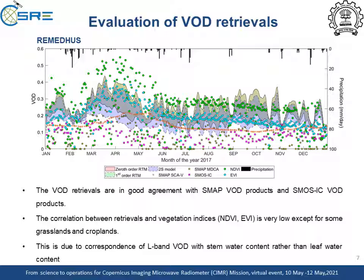The inverted bars represent the precipitation events. We can see a peak in the retrieval after a corresponding precipitation event. The VOD retrievals are in good agreement with SMAP VOD products and SMOS IC VOD products for most of the land-use land cover types. The correlation between the vegetation indices and retrievals is very low except for some grasslands and croplands. This is due to the correspondence of L-band VOD with stem water content rather than leaf water content.